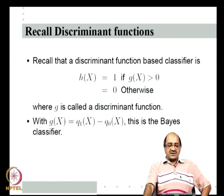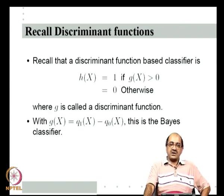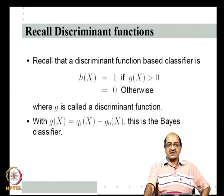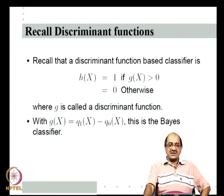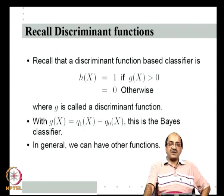The Bayes classifier results if you take g(x) to be q_1(x) minus q_0(x), where q_1 and q_0 are the posterior probabilities of class 1 and class 0 respectively. So g(x) > 0 means q_1(x) > q_0(x), which is the Bayes classifier under the 0-1 loss function. Even the Bayes classifier is essentially a discriminant function based classifier, but the key point is that we do not have to take g(x) to be q_1(x) − q_0(x). We can take many other functions for g(x), giving a richer class of classifiers.